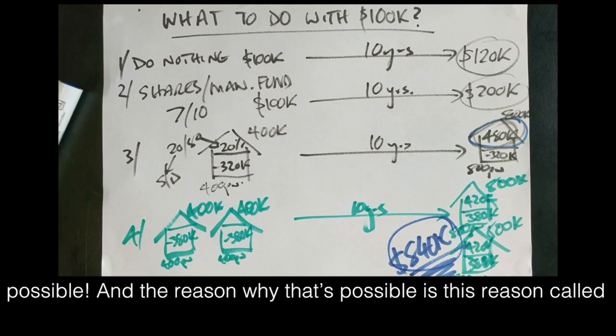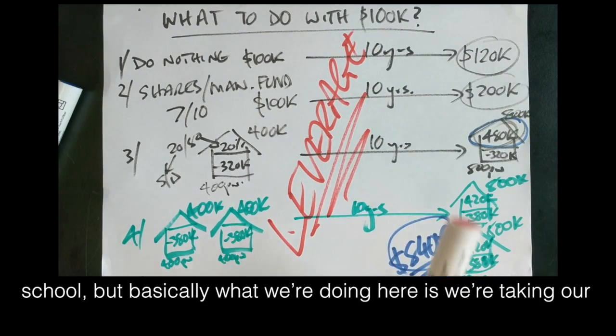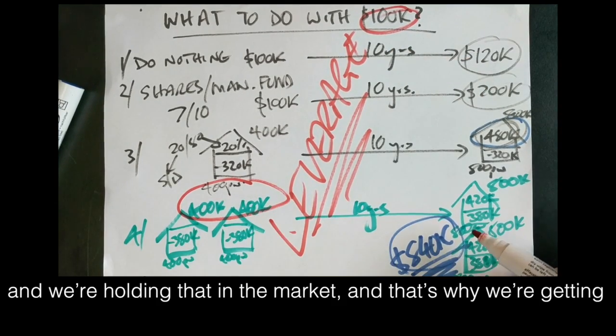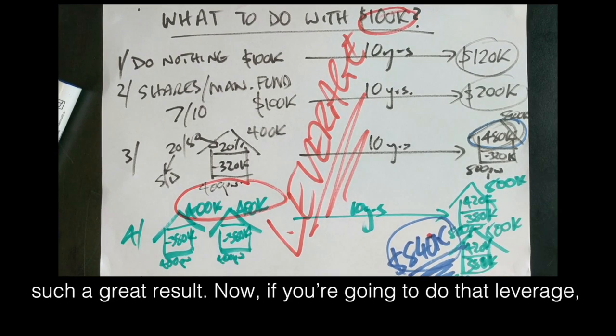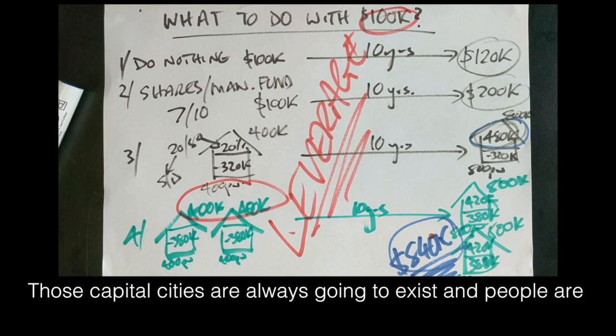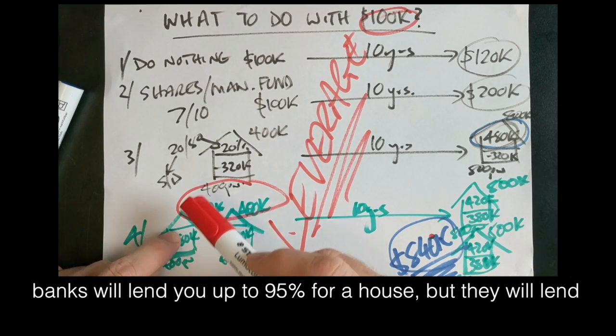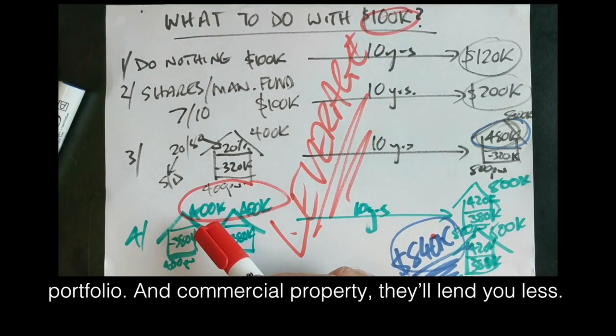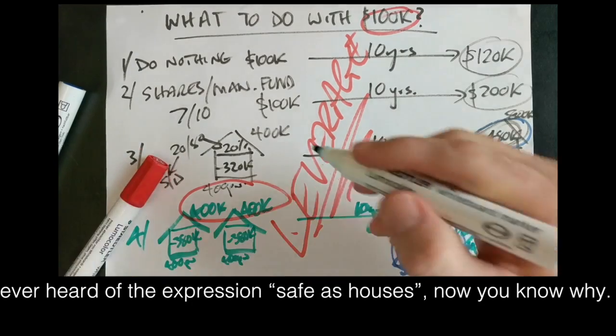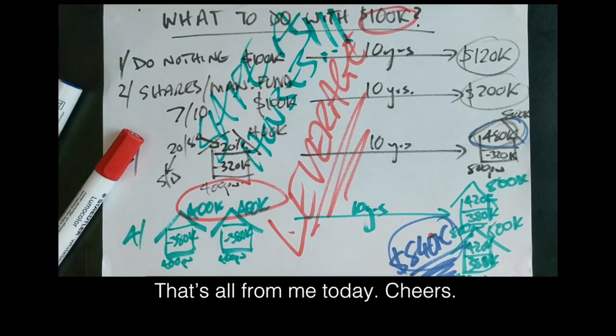And the reason why that is possible is this thing we call leverage. It's a financial term they don't teach you at school. But basically what we're doing over here is we're taking our $100,000 and we're turning it into $800,000 worth of asset. And we're holding that in the market. And that's why we're getting such a great result. Now if you're going to do that leverage, would you do it on shares? Not on your life. You know, too volatile, too crazy. But residential homes in capital cities of Australia, those capital cities are always going to exist and people are always going to need residential homes. This is why the banks will lend you up to 95% for a house, but they will lend you barely anything on shares, maybe 30% of your share portfolio. And commercial property they'll lend you less. They love residential property because it's so safe. If you've ever heard of the expression, safe as houses, now you know why. That's all for me today. Cheers.